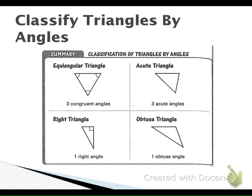If you are classifying by angles, our first type is equiangular — 'equi' means equal, 'angular' means angles, so three congruent angles. An acute triangle has three acute angles, all less than 90 degrees. A right triangle has exactly one right angle. An obtuse triangle has one obtuse angle.